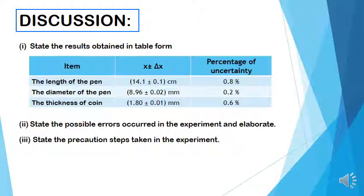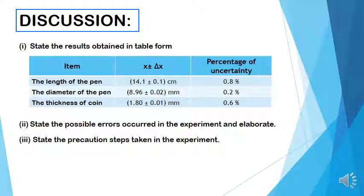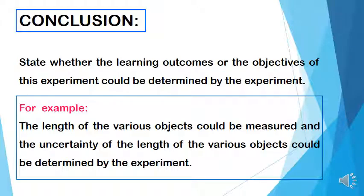Discussion, Roman 1: state the results obtained in table form. Roman 2: state at least two possible errors that occurred in the experiment and elaborate on them. Roman 3: state at least two precaution steps taken in the experiment. For the conclusion, state whether the learning outcomes or objectives of this experiment could be determined by the experiment — for example, that the length of various objects could be measured and the uncertainty of the length could be determined.